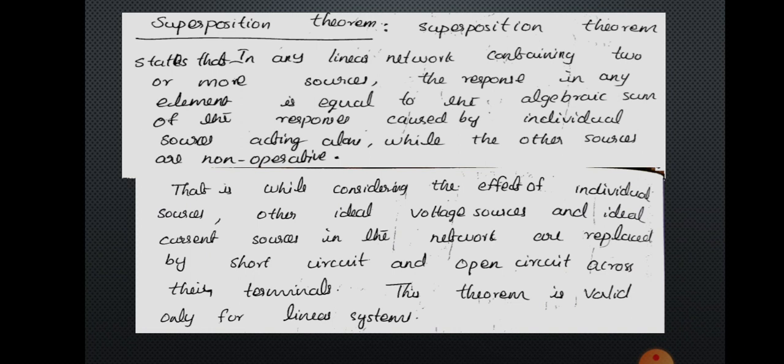In the case of superposition theorem, circuits may contain voltage sources and current sources. If we are asked to find out the current through a particular branch, we consider a single source and neglect the effect of the other source, then consider the other source and neglect the first. We add up all the responses due to each source, and the algebraic sum gives the result.